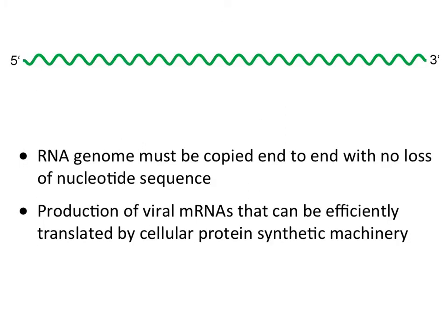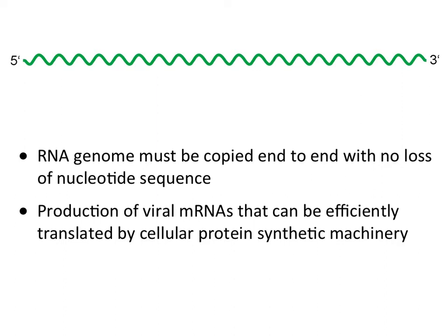An obvious requirement during RNA replication is that the RNA has to be copied from end to end — you can't lose any sequence. In some cases, viral RNAs that are shorter are made, but those are mRNA synthesis steps, not replication. In cells infected with RNA viruses, you also have to make mRNAs that are translated. Sometimes the genome is the same as the mRNA, sometimes not.